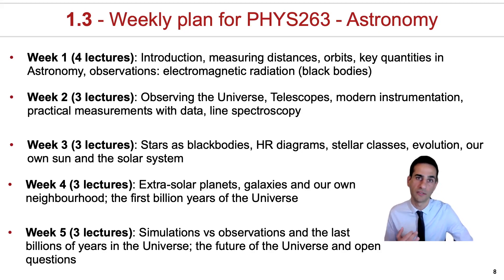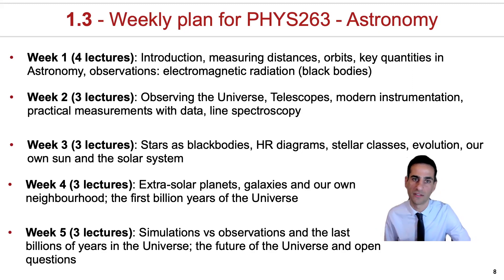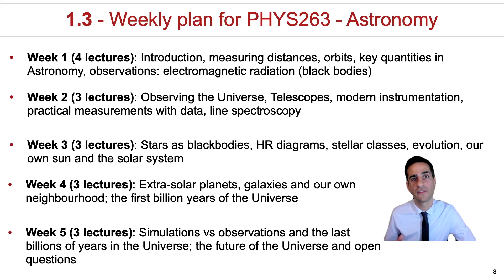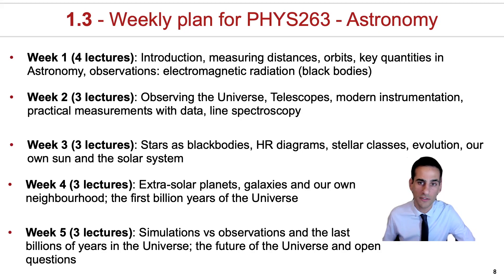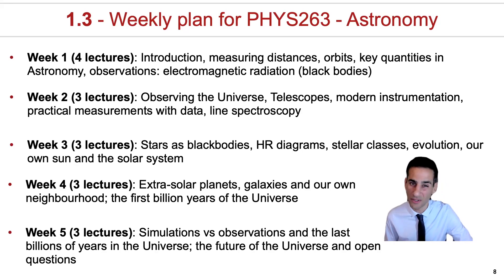That will include flux luminosities, magnitudes, absolute magnitudes, and we'll start with part one of section five, which is about electromagnetic radiation, specifically focusing on the continuum and black bodies. We're then going to move to how we observe the universe and telescopes, instrumentation.